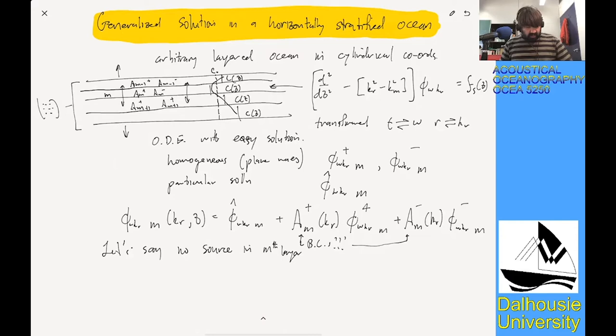Now, let's say no source in mth layer. So there's no source in the mth layer. I'm going to drop some of those subscripts. So this is mth, phi plus E to the I K Z Z, phi minus is equal to E to the minus I K Z Z, and F S Z is equal to zero. And K Z of course is equal to K M where this is in mth layer squared minus K R squared.